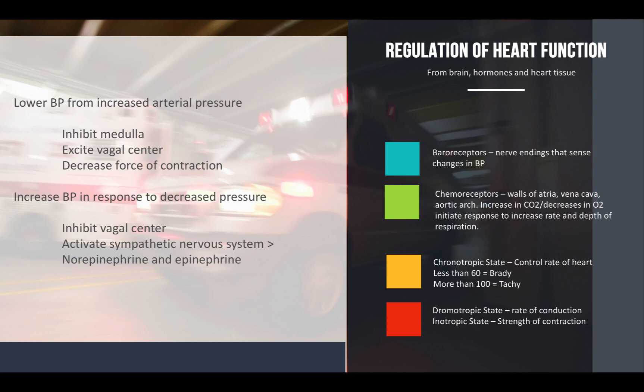Your chronotropic state is that control of the heart rate — your bradycardia where the heart rate is less than 60, or tachycardia where the heart rate is greater than 100. And then we have the dromotropic state, which is the rate of electrical conduction, and then the inotropic state, which is that strength of the contraction.